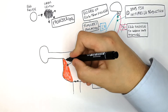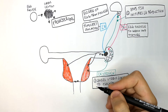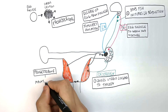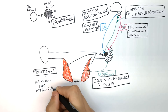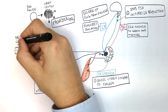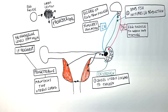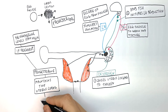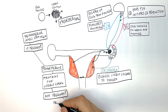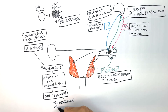Progesterone maintains the uterus lining. If progesterone levels are high, the uterus lining is maintained. If the woman is pregnant, the progesterone levels stay high to maintain the uterus lining so she does not menstruate and lose the embryo embedded on the lining. If she is not pregnant and the egg has not been fertilised, progesterone levels fall.